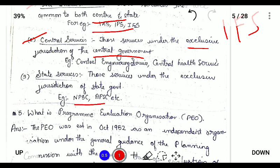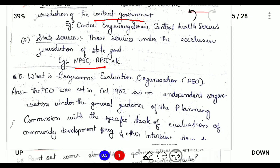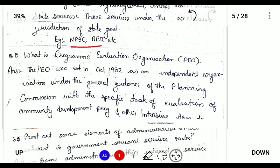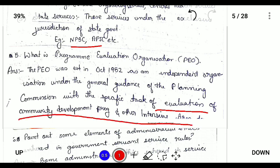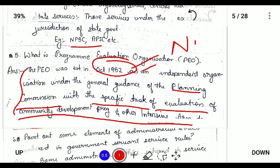What is the Program Evaluation Organization? It is an organization established in October 1952 under the guidance of the Planning Commission to evaluate the Community Development Programme and other intensive area development programmes. Its task is to evaluate these development programmes. Now it will be under the NITI Aayog.